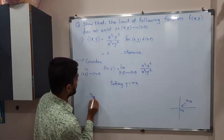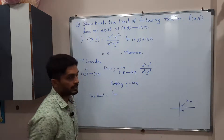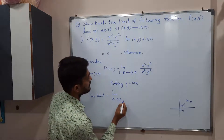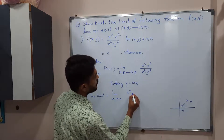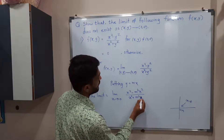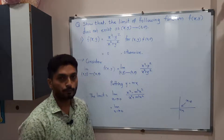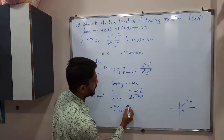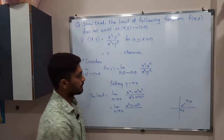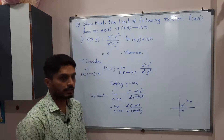After putting y = mx, the entire problem converts into x. So the limit becomes: limit as x tends to 0 of (x² - m²x²) / (x² + m²x²). Now, can we take x² common from the numerator? Obviously yes — we get x²(1 - m²) in the numerator and x²(1 + m²) in the denominator. So x² cancels from numerator and denominator.